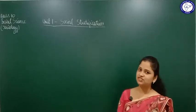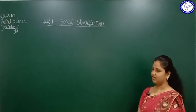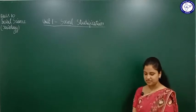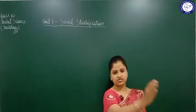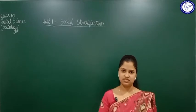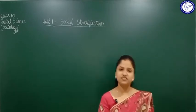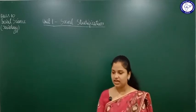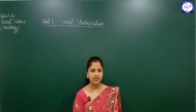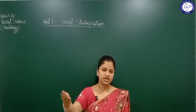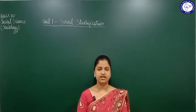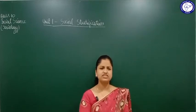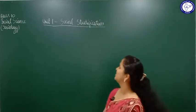Let's start with the first chapter of sociology and social science: social stratification. This word stratification means dividing people into different classes. People are divided according to caste — higher caste, lower caste, middle class — and also according to education, whether they are well educated, not educated, or illiterate.